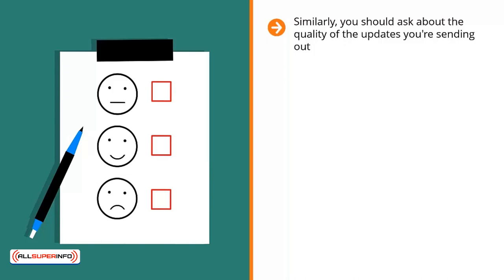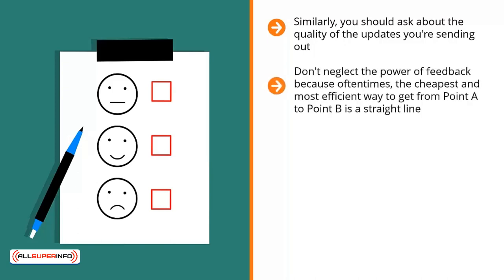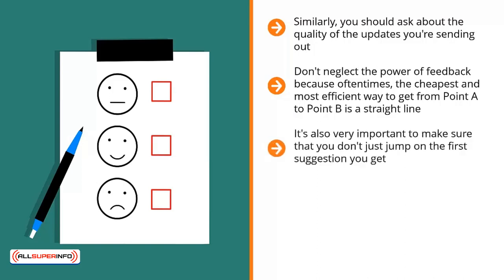Similarly, you should ask about the quality of the updates you're sending out. More specifically, ask your list members: what improvement should I make for you to forward my emails to people you know? Don't neglect the power of feedback, because oftentimes the cheapest and most efficient way to get from point A to point B is a straight line. Ask your list members, but offer an incentive.